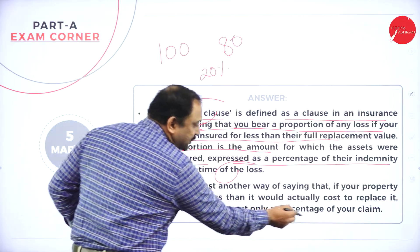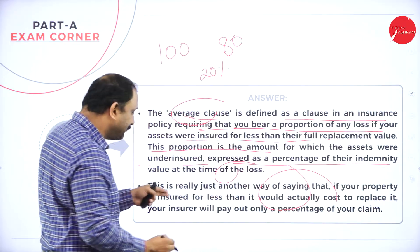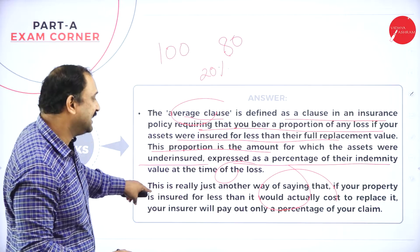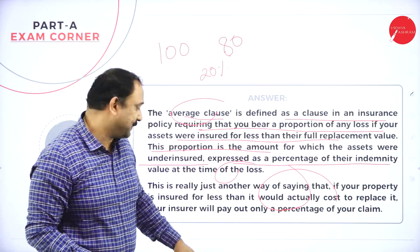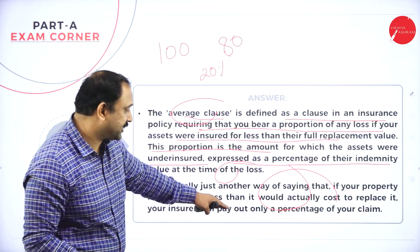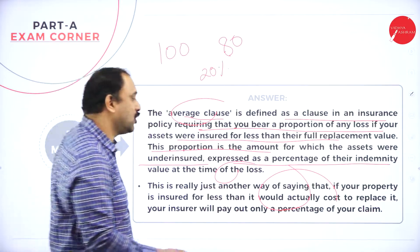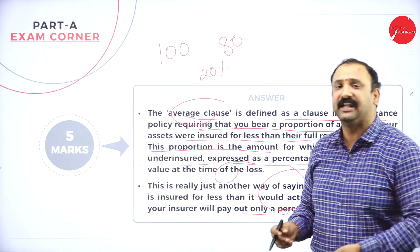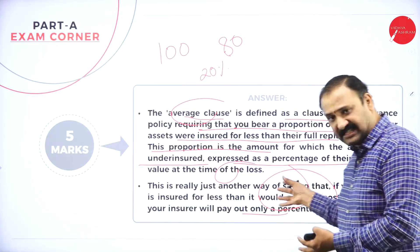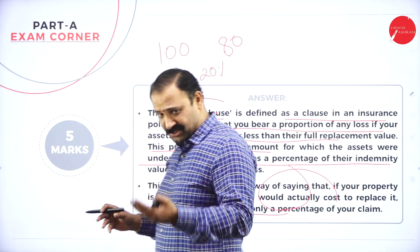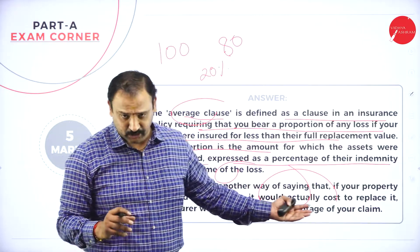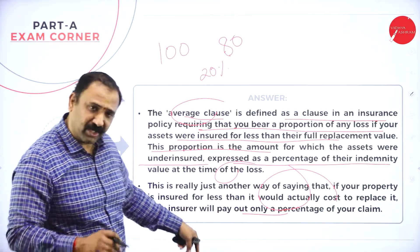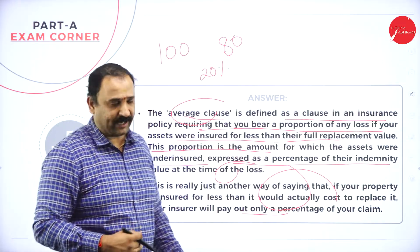This is really just another way of saying that if your property is insured for less than the actual value to replace it, your insurer will pay out a percentage of your claim. So your insurer will claim a percentage out of it and that has to be taken into the claim factor altogether. Definitely your insurer will pay out for the claim.